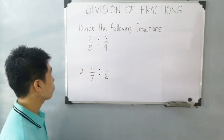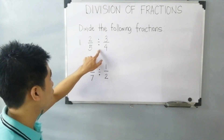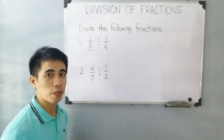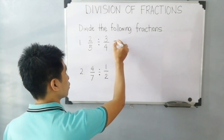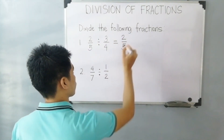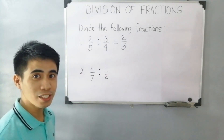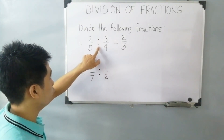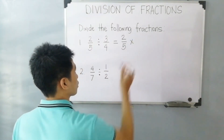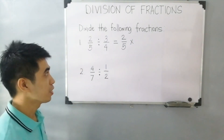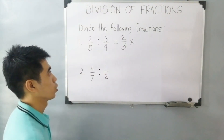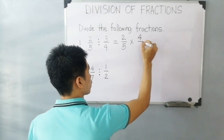For item number one, we have 2 over 5 divided by 3 over 4. So the first step is to rewrite the first fraction, which is 2 over 5. Then change the operation of division into multiplication. And then get the reciprocal of 3 over 4, or the second fraction. So we have 4 over 3.